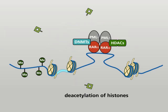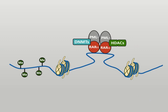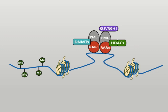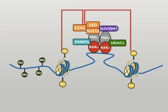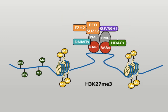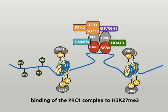In addition, proteins of the polycomb group are recruited. The protein shown in lilac here is a histone methyltransferase, which trimethylates lysine residues in position 9 of histone 3. The EZH2 polycomb protein is a histone methyltransferase, which trimethylates the lysine residue in position 27 of histone 3. The trimethyl mark of H3K27 recruits the polycomb repressor complex 1.